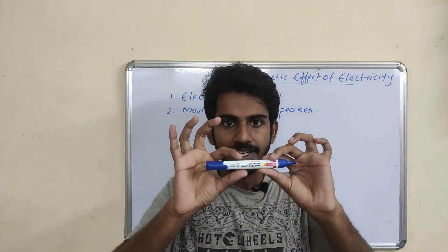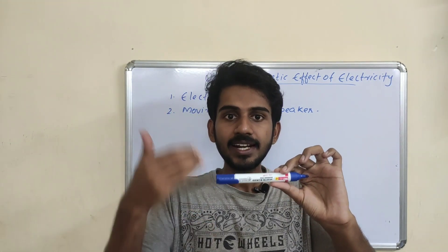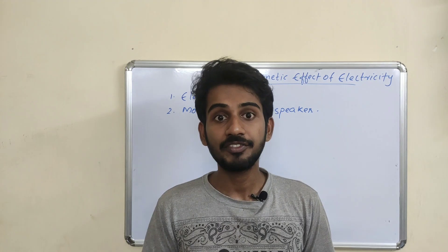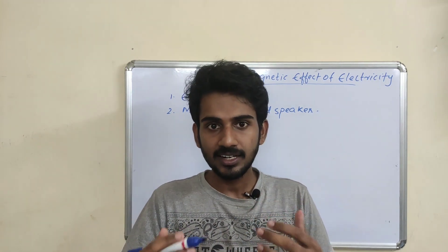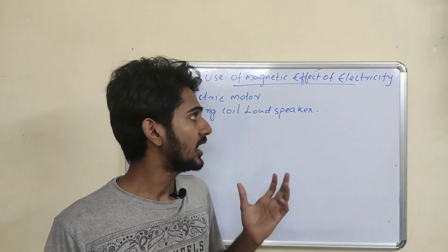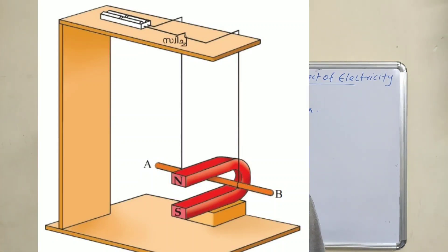This force is in a direction, and this direction is called Fleming's Left Hand Rule. For example, we have an image in the text. A magnet, a conductor, and a battery are set in a magnetic field.